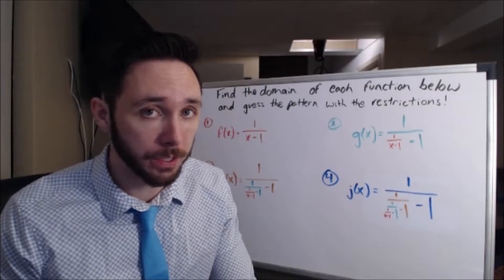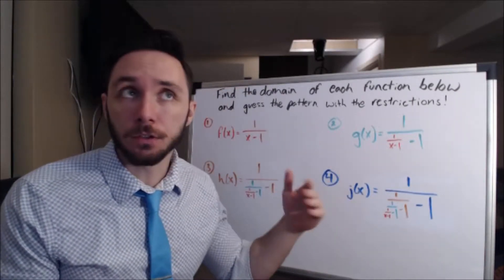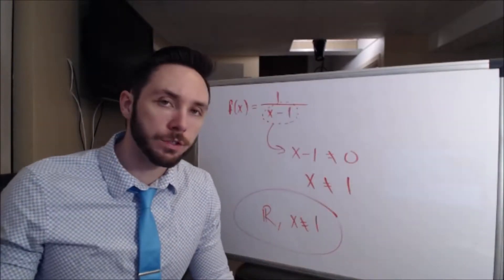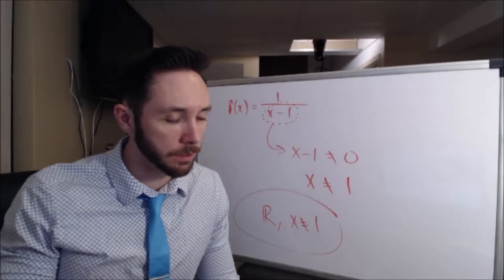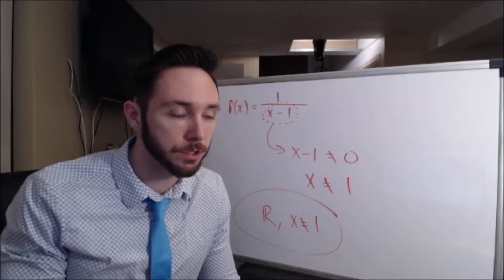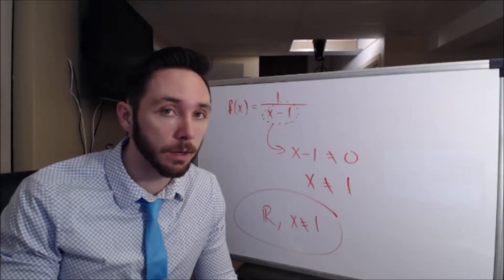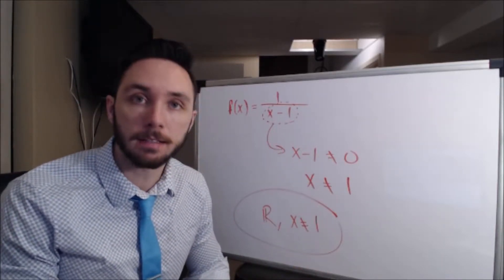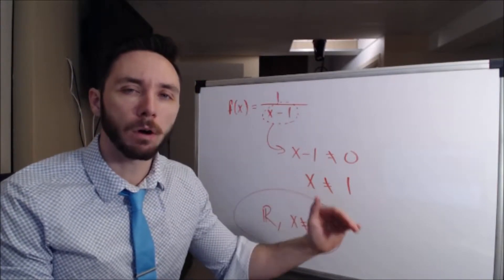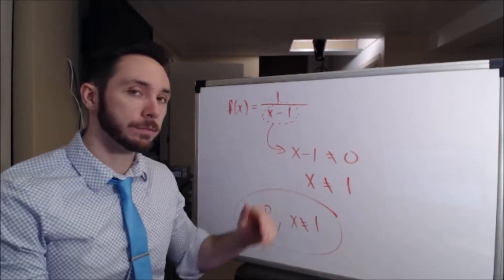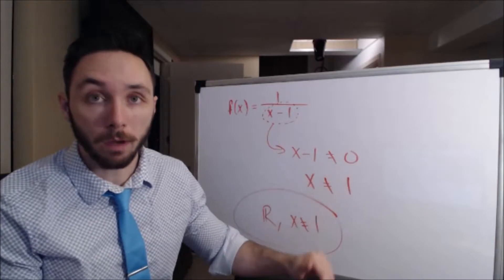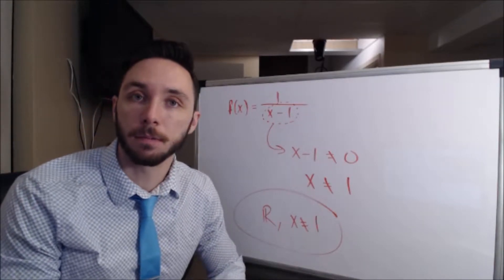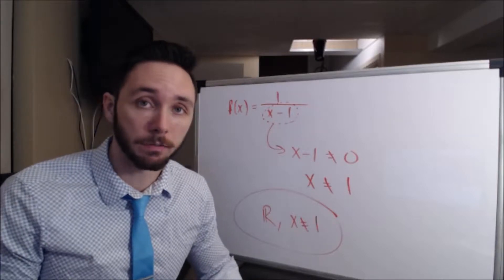The objective is to find the domain of each function and discover a pattern. It's incredibly straightforward: the single number you can never divide by is 0. So I set the denominator equal to 0. With rational functions, all real numbers are fair game except when your denominator works out to be 0. Here we have x minus 1 in the denominator — setting that equal to 0 and adding 1 to both sides gives a restriction at x = 1. It's every real number but 1.